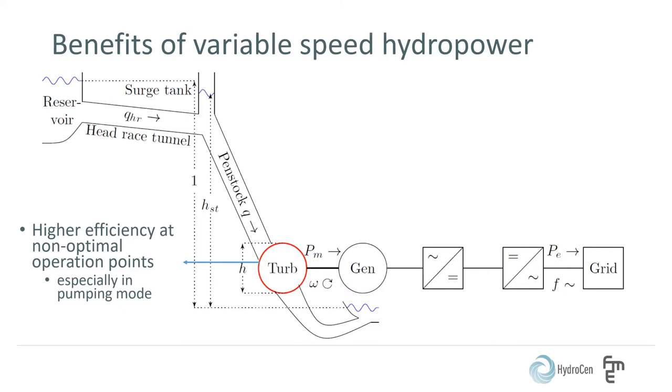Usually, this is the case at low production. The highest increase in efficiency is achieved when the turbine is a pump turbine operating in pumping mode. In this case, the variable speed operation also allows for adjustment of the pumping power.